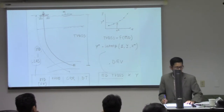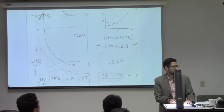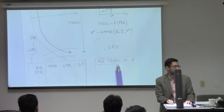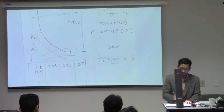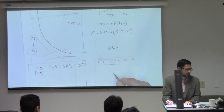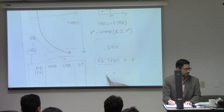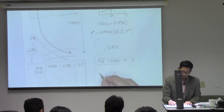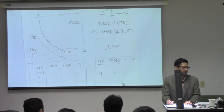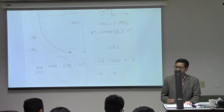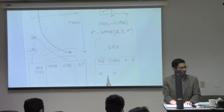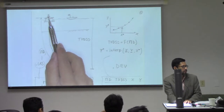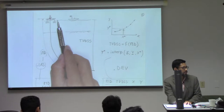Part of the solution: if you check the deviation file, it links measured depth and true vertical depth. You will see that the actual surface of the water is at about 25 meters of measured depth. That kind of makes sense — the rotary table is at 25 meters above the surface of the water.